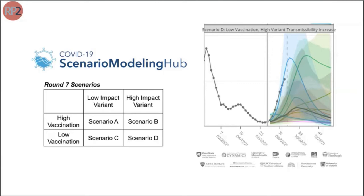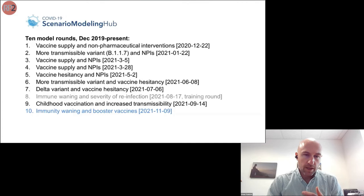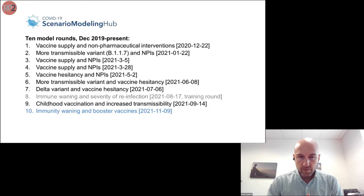We've had 10 rounds so far, each trying to focus on very timely and important unknown questions that have changed as the pandemic has evolved — looking at things like vaccine supply, non-pharmaceutical interventions, changing behavior and control in the United States, changing variants starting with Alpha, then Delta, and now Omicron, changing vaccine hesitancy and saturation, immunity waning, and implementing vaccination in new age groups.